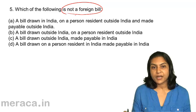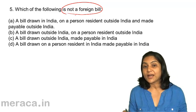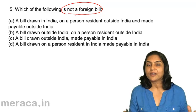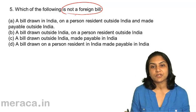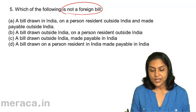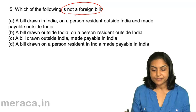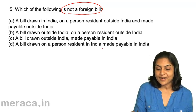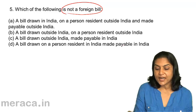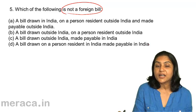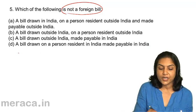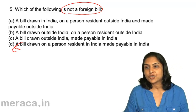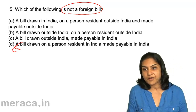A foreign bill is one drawn in one country and payable in another country. A bill drawn on a person resident in India and made payable in India is a local bill — this is not a foreign bill. Therefore, 5D should be the correct answer.